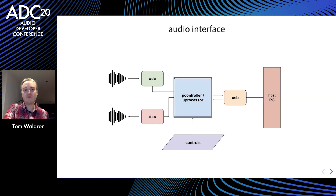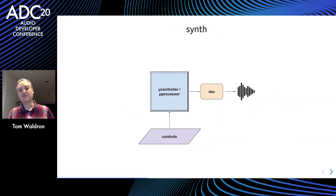Perhaps we want to make an effects pedal — a bit simpler. We might have audio coming in via an analog filter into our processor via a converter, maybe foot pedals for controls, and a digital audio converter on the output side sending the audio back out. Or maybe we just want to make a synth — a bunch of controls, could be knobs, could be a touch screen, whatever you want. The processor will generate our audio and send it out the DAC, in theory.